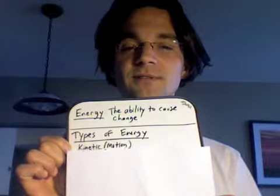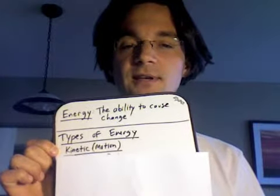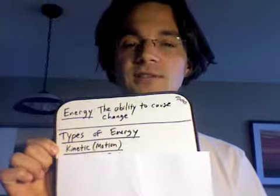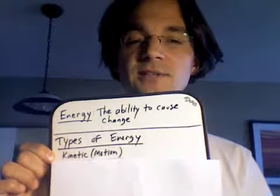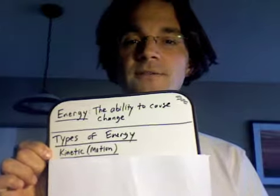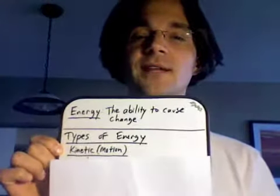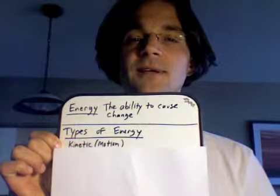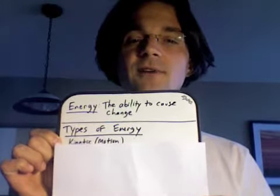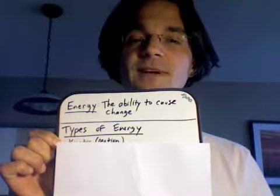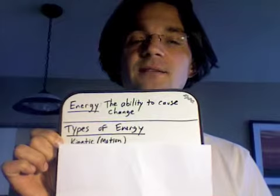My first type of energy is called kinetic energy. You might not have mentioned that word, but that's okay. Kinetic energy is just the energy that things have when they're moving. If I fall out of my chair, that's a little bit of kinetic energy. If I throw something up in the air, that's kinetic energy. If a car drives by, it has kinetic energy. Anything that's moving has kinetic energy.